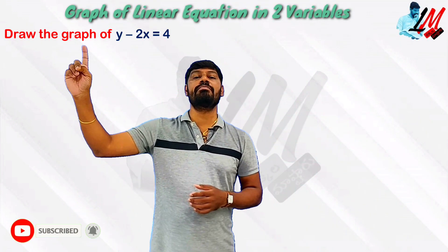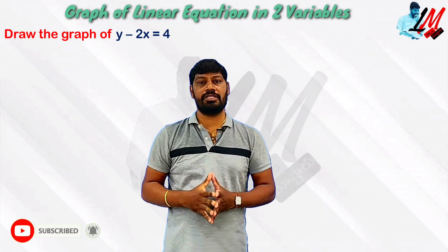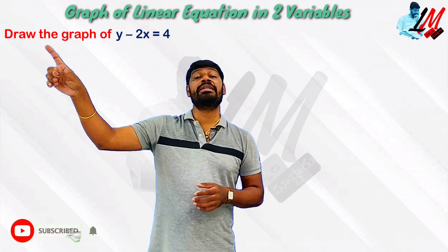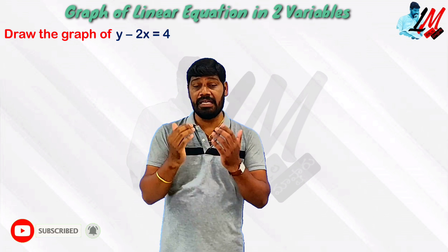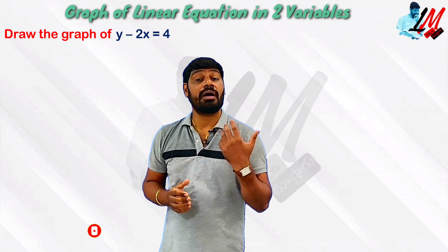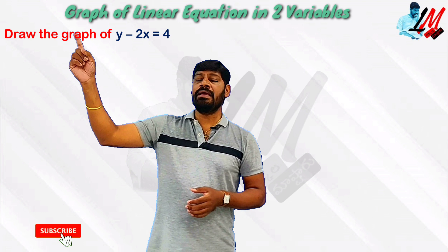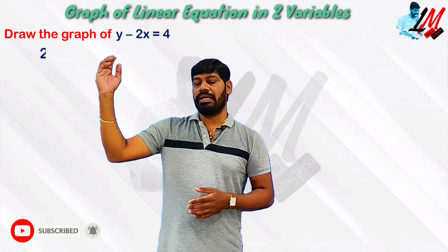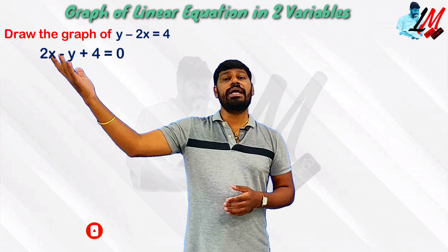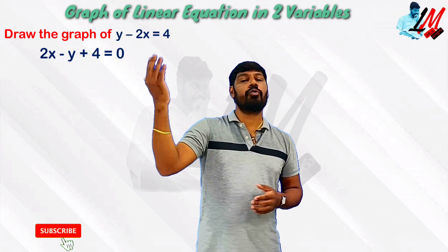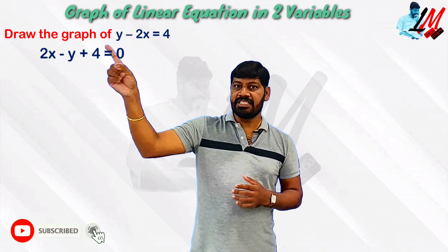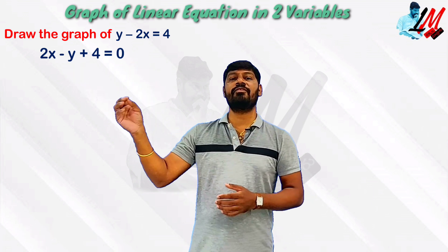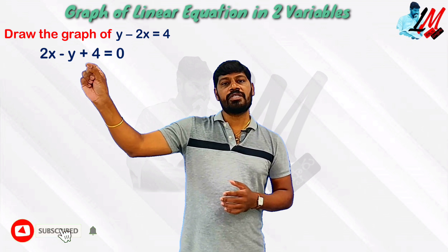Draw the graph of y minus 2x is equal to 4. First of all, we will convert this to the general formula. We will transpose y minus 2x equals 4 to get 2x minus y plus 4 is equal to 0. This is the general formula, where we have clear values of a, b, and c. We already have an equation and a graph of y minus 2x.